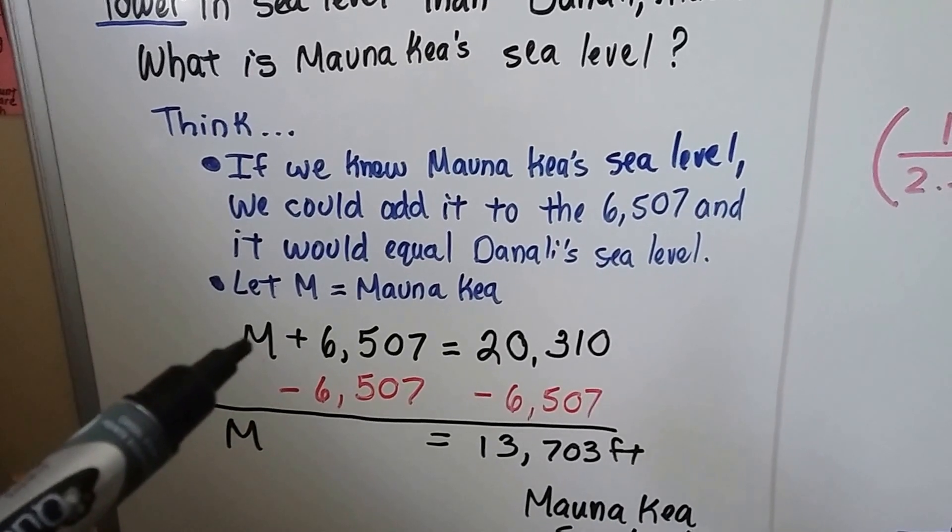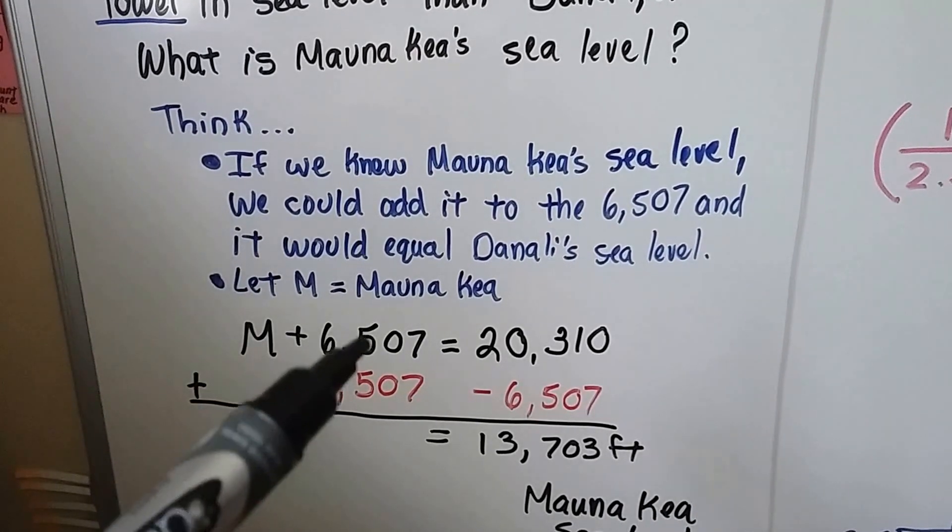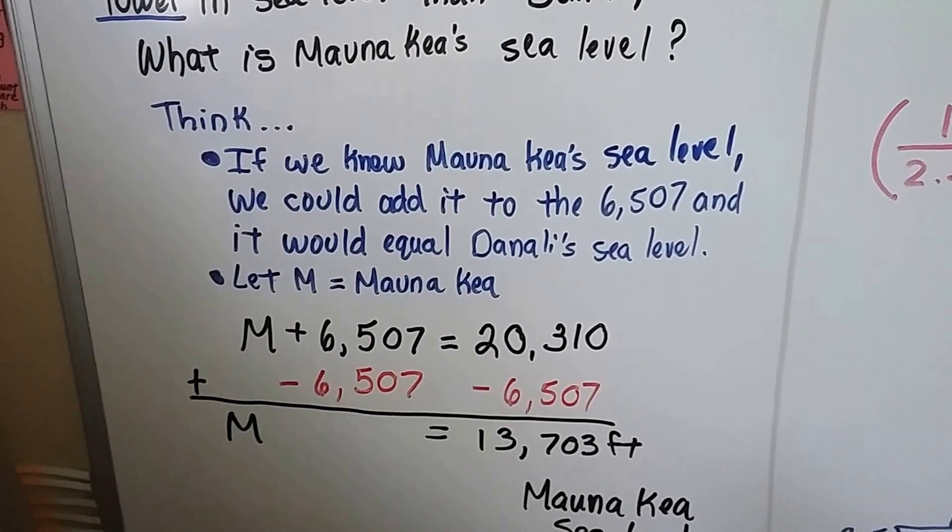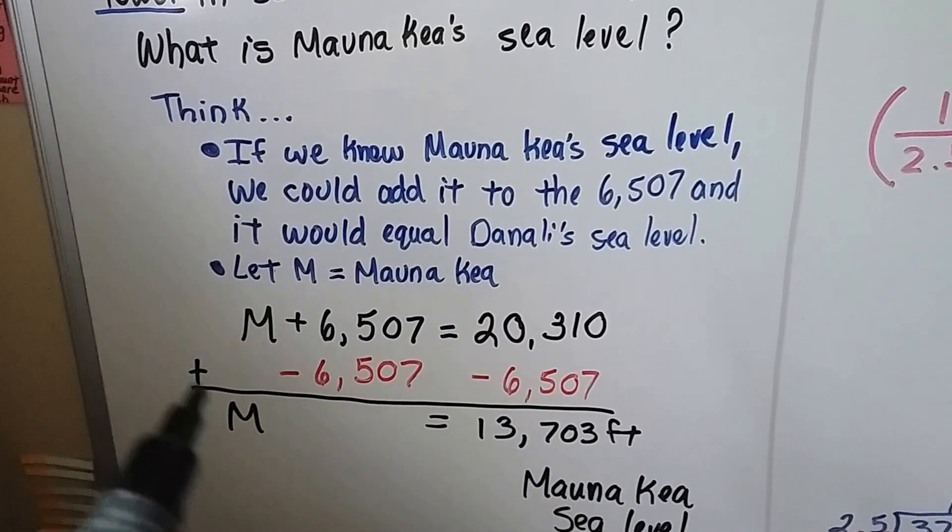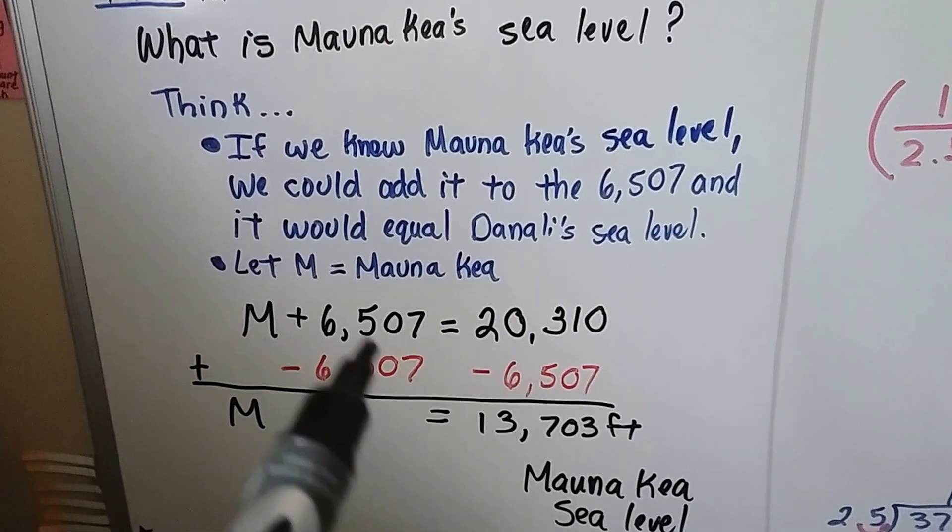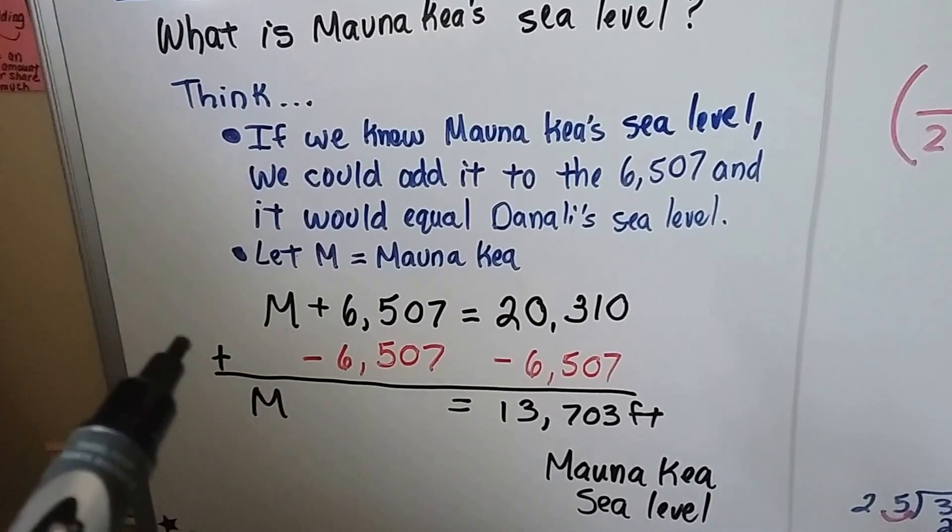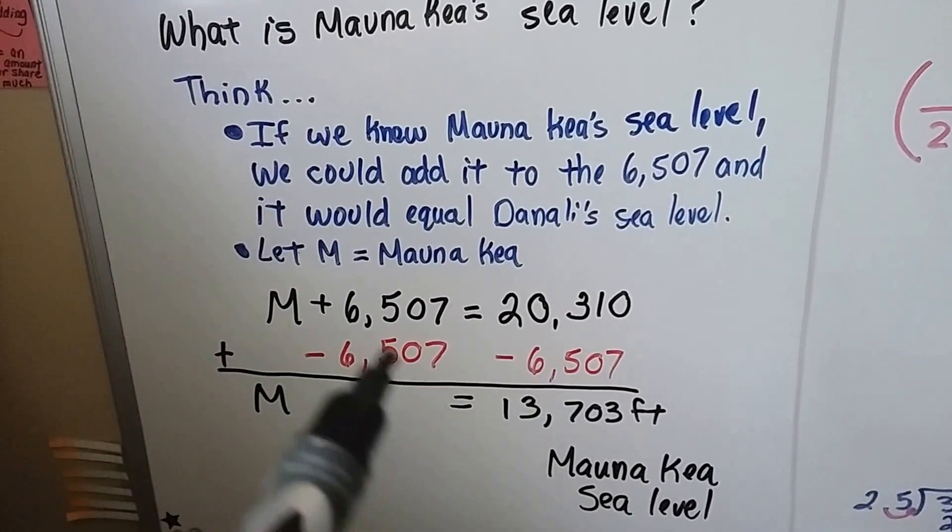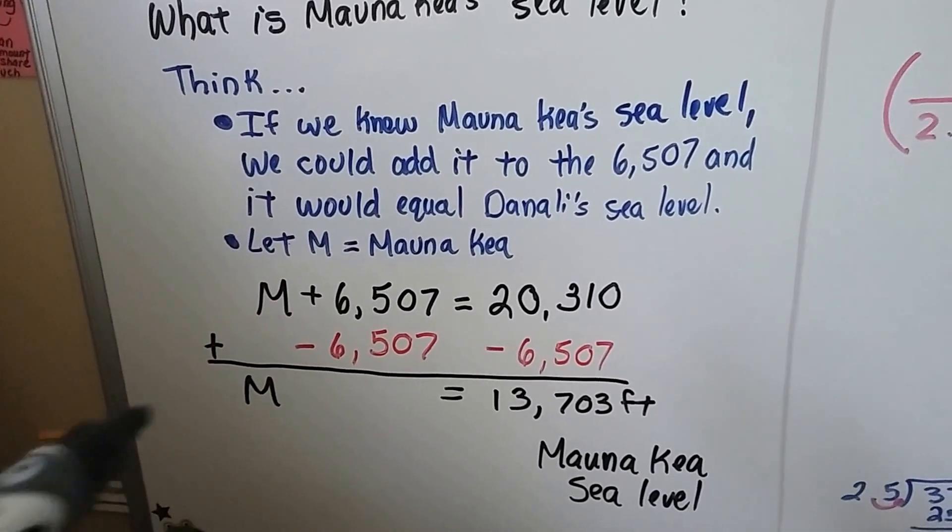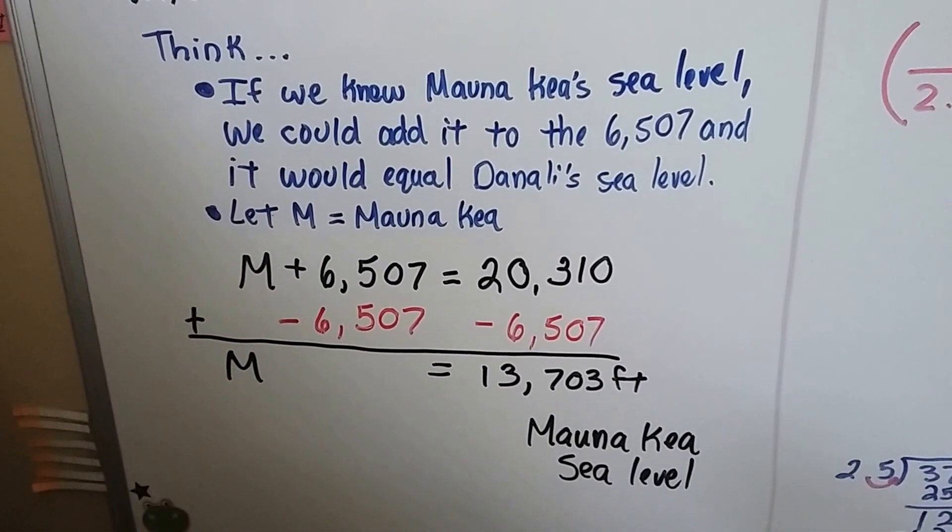So we have M for Mauna Kea plus the 6,507 equals 20,310. And you can look at this as subtracting the 6,507 from each side of the equation, or you can look at it as adding a negative 6,507 to each side of the equation. You're going to come across this a lot in algebra.